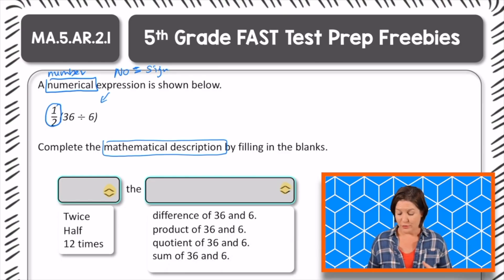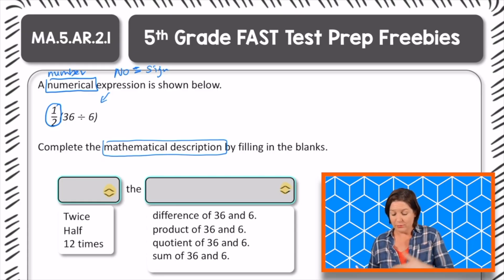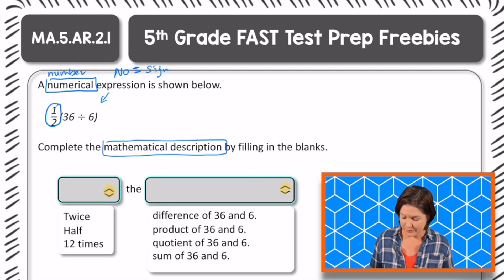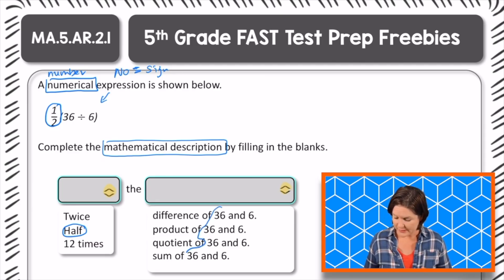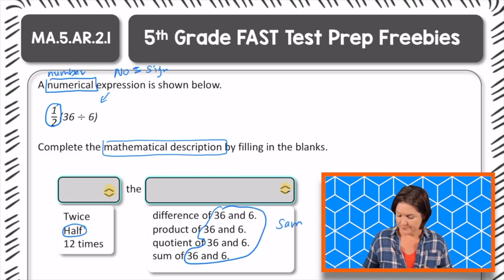I think they're talking about this piece right there, and that is the fraction that we would read as one half. So this would be not twice the blank, and not 12 times the blank, but half the blank. Half the, and I see 36 and 6 is all the same right here. So it's just about changing these vocabulary words right there.